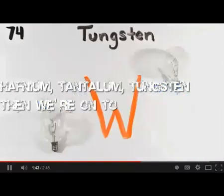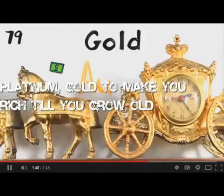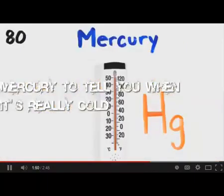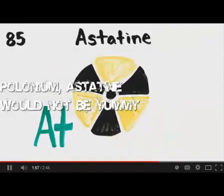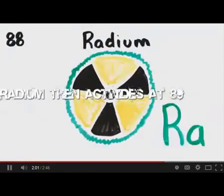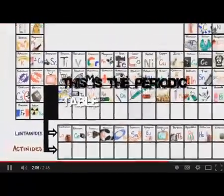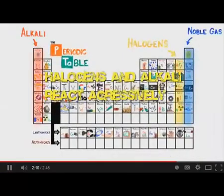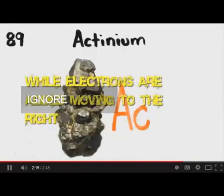Hafnium, tantalum, tungsten, and then we're on to rhenium, osmium, and iridium, platinum, gold, to make you rich till you grow old, mercury, to tell you when it's really cold, thallium, and lead then bismuth for your tummy, polonium, astatine would not be yummy, radon, and francium will last a little time, radium, then actinides at 89. This is the periodic table, noble gases stable, halogens and alkali react aggressively, each period we see new outer shells, while electrons are added moving to the right.